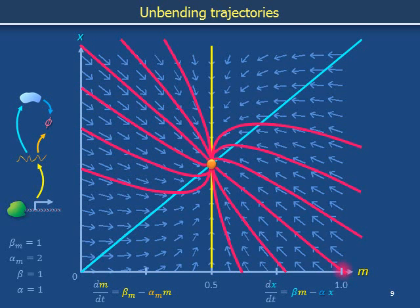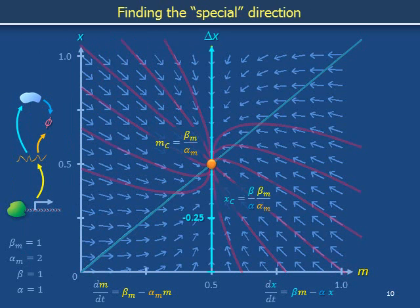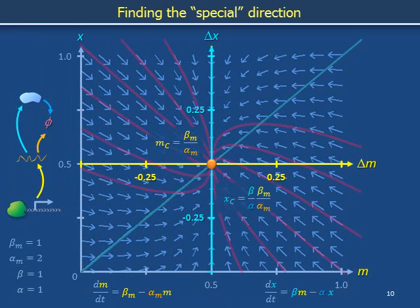We would like to describe the motion along these unbending trajectories. To do so, it is convenient to re-express the system of differential equations in terms of a coordinate system centered on the critical point. The variable delta m measures eastward distance from the critical point, and delta x measures northward distance from the same point.